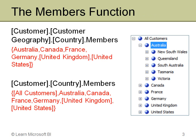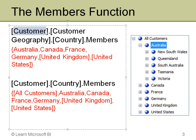The first function I'll examine is the members function, which displays the members at a particular level in a hierarchy. The first example is customer.customergeography.country.members. The first reference is the dimension name — the customer dimension. The second reference, customer geography, is the multi-level hierarchy. That hierarchy has a level called country, and I'm looking for the country members in that particular dimension hierarchy.